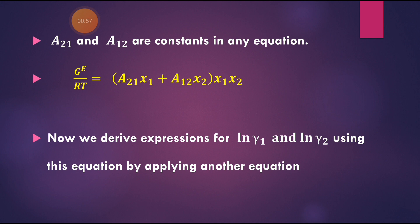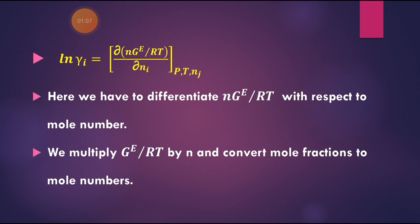We derive expressions for ln γ₁ and ln γ₂ by considering the equation: ln γᵢ = ∂(nGE/RT)/∂nᵢ at constant pressure, temperature, and nⱼ. This expression is already given in solution thermodynamics — you can check previous videos.